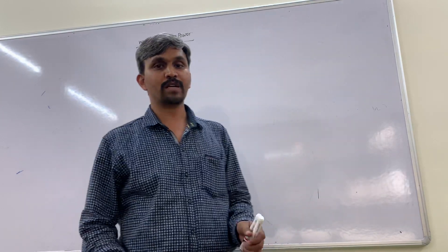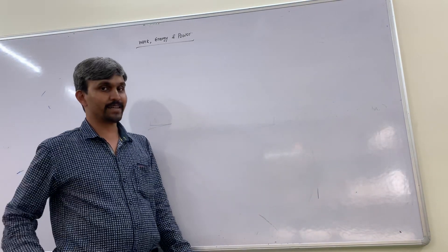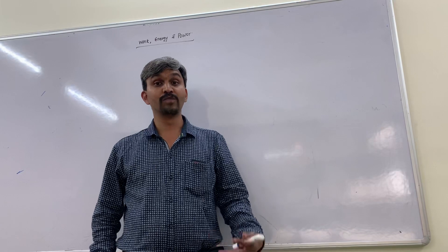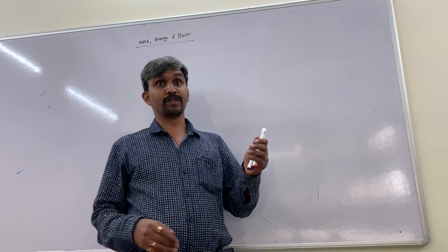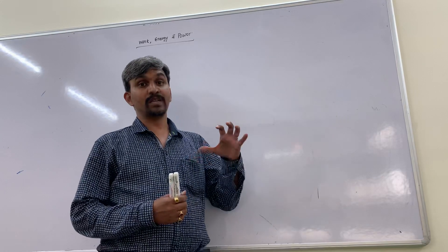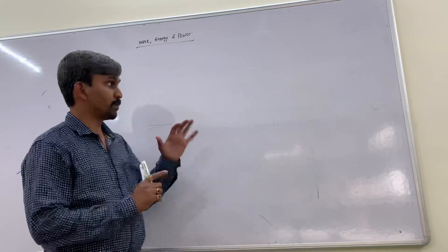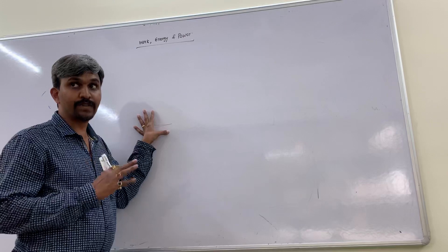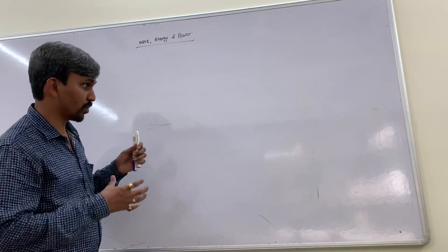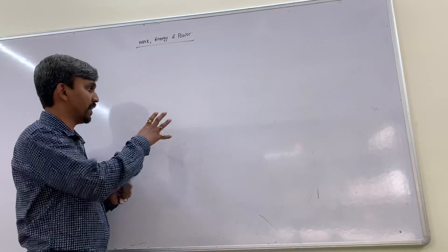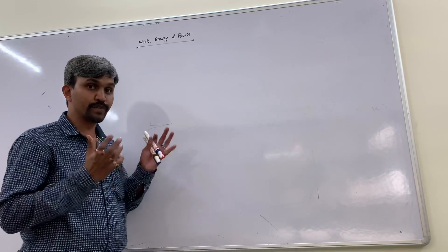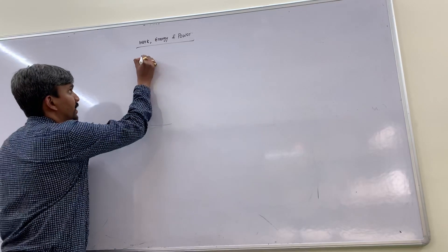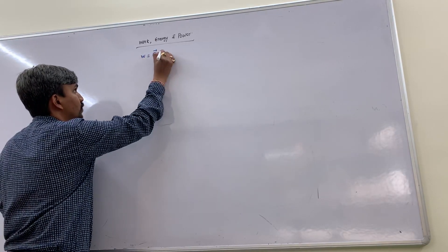Today we are going to start the second chapter of 10th grade: Work, Energy and Power. What is work in terms of physics? Work requires a force and a displacement. For example, if I push a board but it doesn't move, according to physics I'm not doing any work because there is no displacement. Work is the dot product of two vectors.